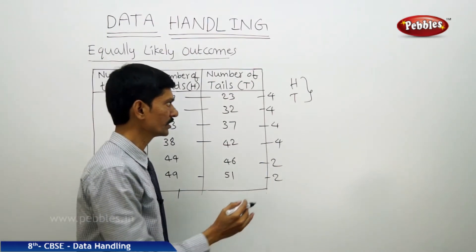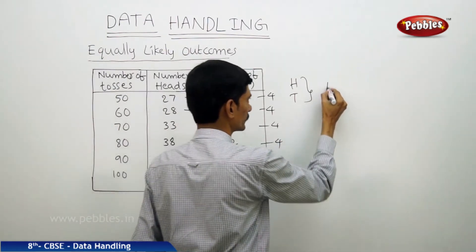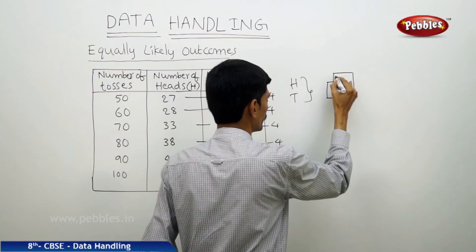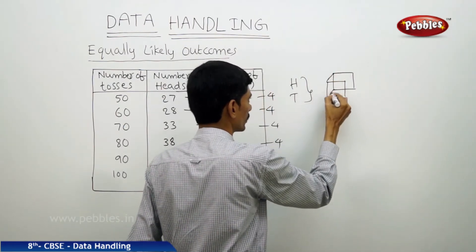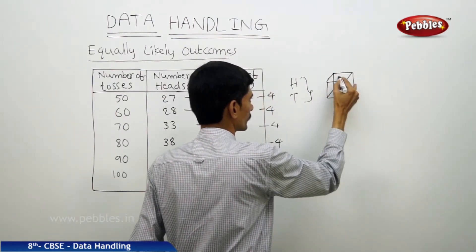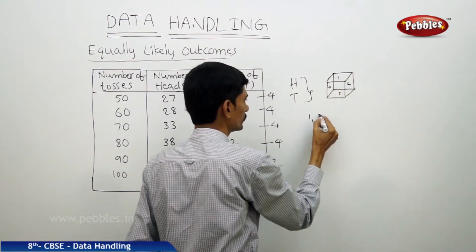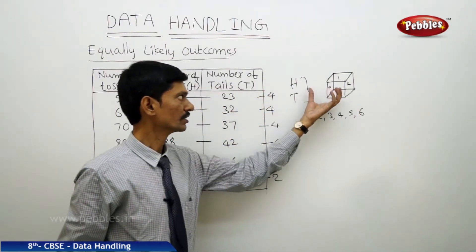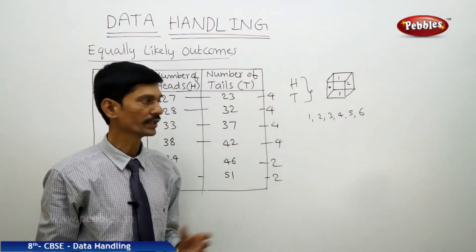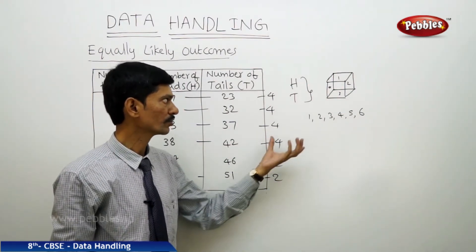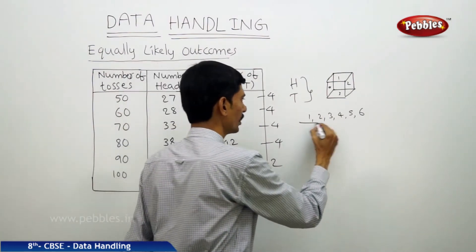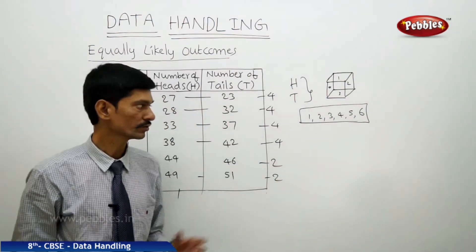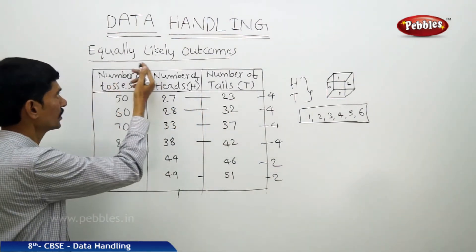This can also be done using a die. If you take a die and throw it, numbers 1 to 6 are written on each face. So the possible outcomes are 1, 2, 3, 4, 5, 6. If you throw the die several times and increase the number of throws, we can observe that all possible outcomes have equal chances of occurring. Such outcomes are called equally likely outcomes. In tossing a coin, head and tail are equally likely outcomes. In throwing a die, 1, 2, 3, 4, 5, 6 are also equally likely outcomes.